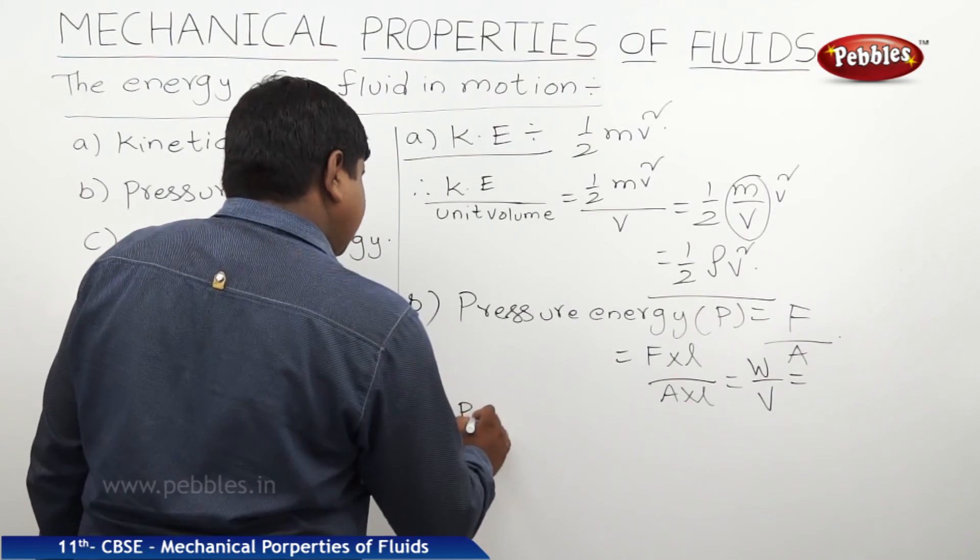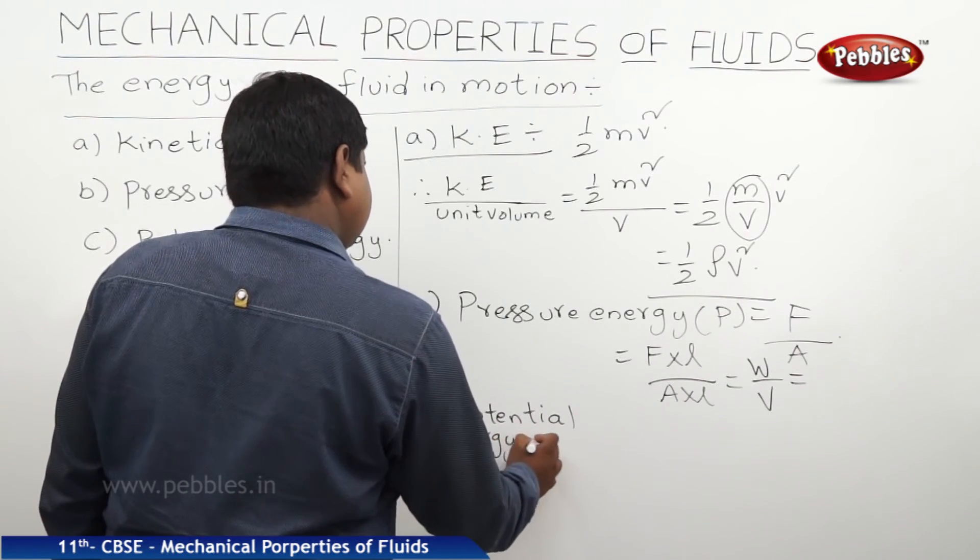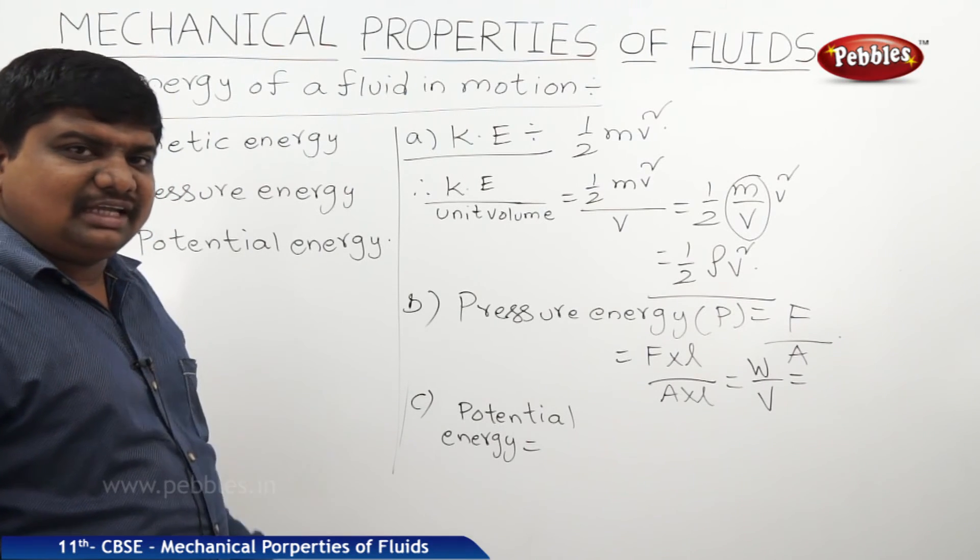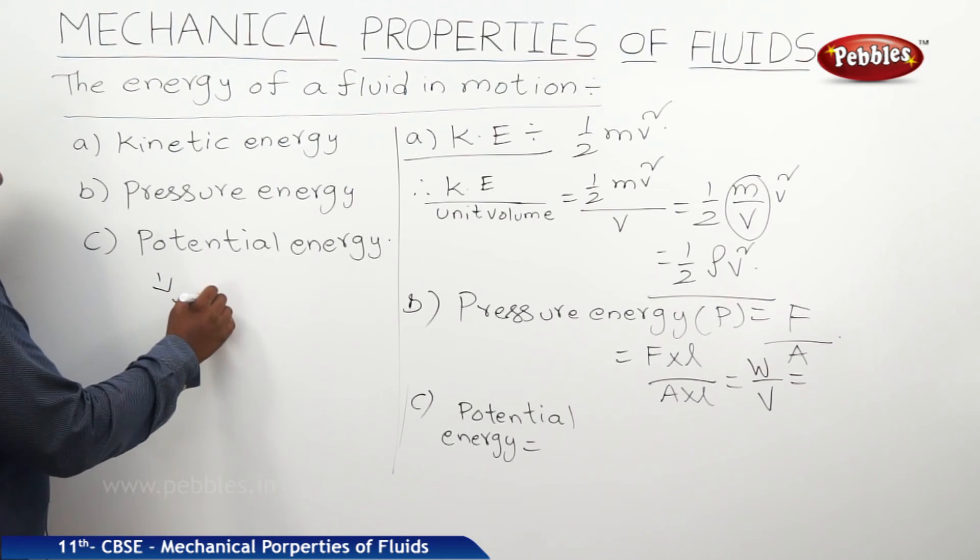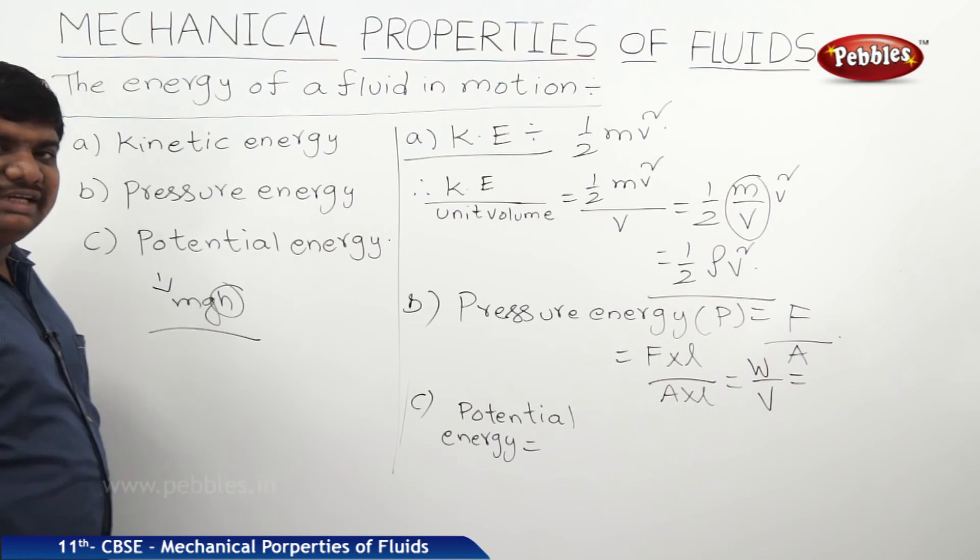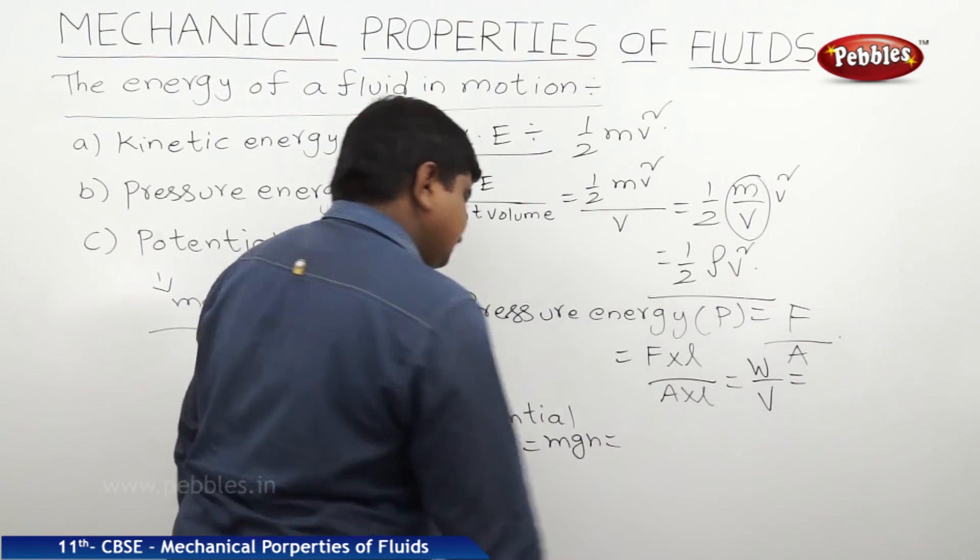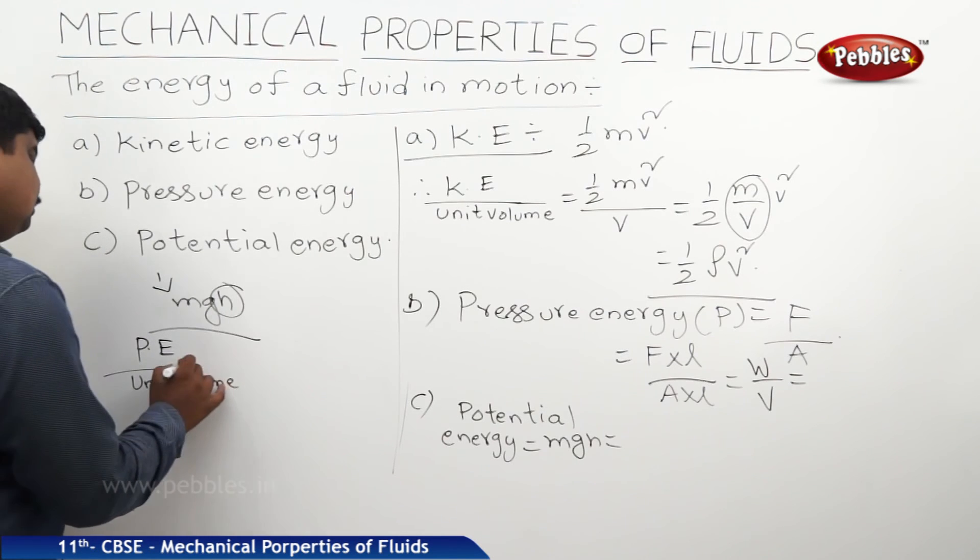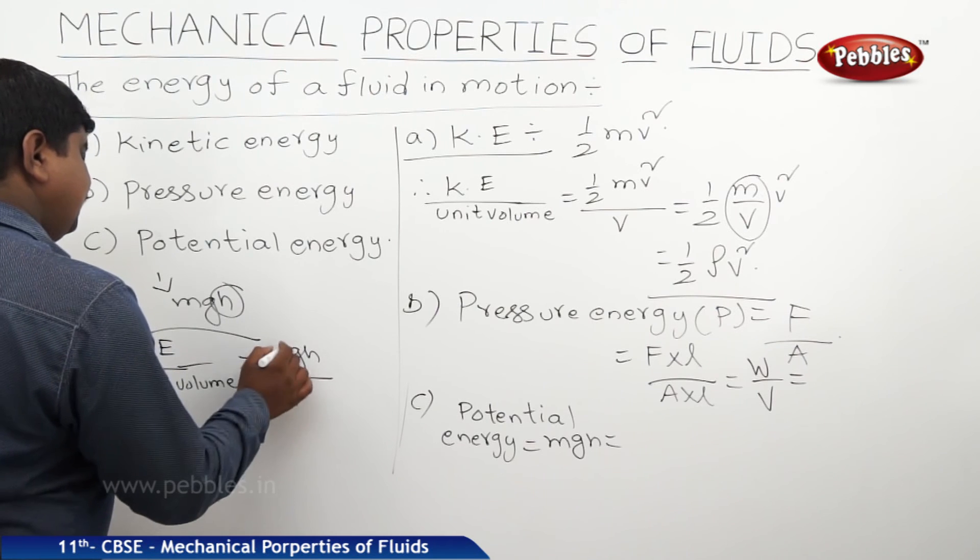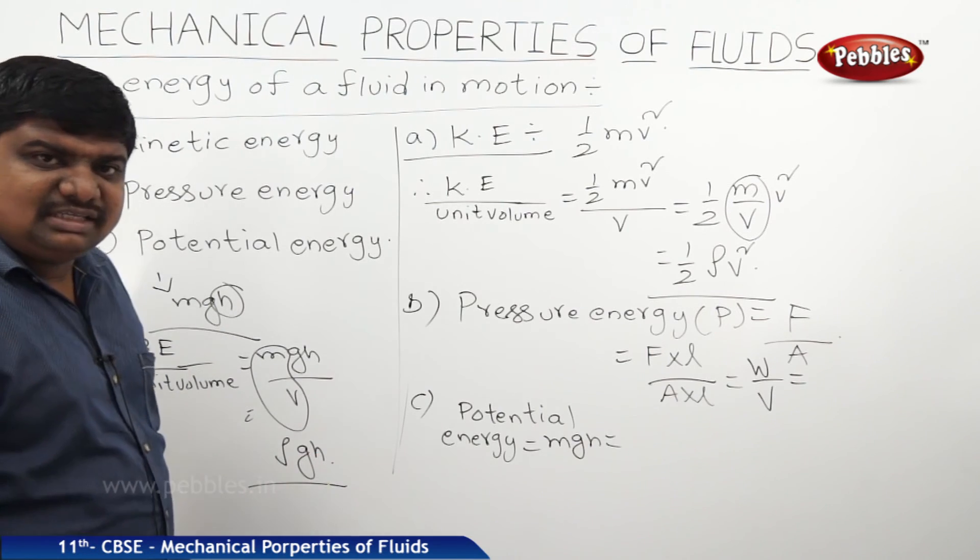The third one is potential energy. Potential energy is due to the position of the particle from a certain point. According to the general equation, potential energy equals MGH, where H is the position of the desired point from a reference. For unit volume, PE per unit volume equals MGH by V. Since M by V equals rho, it is rho GH. So the potential energy per unit volume is rho GH.